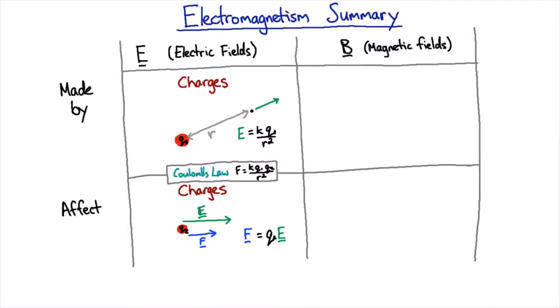And so what makes magnetic fields? Well the answer is moving charges. So we saw that if we have an infinitely long wire carrying a current, then the magnetic field a distance r away from that would have a strength given by